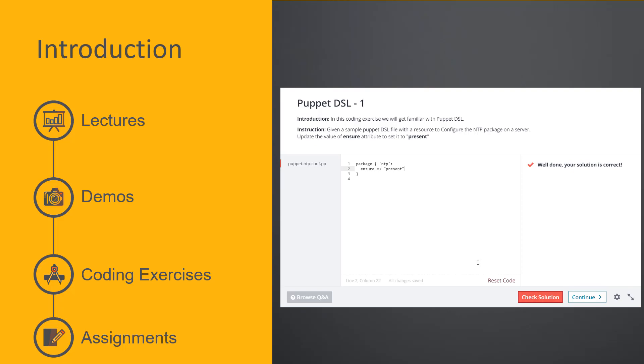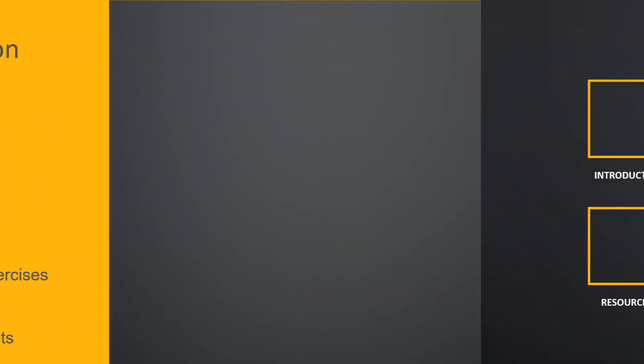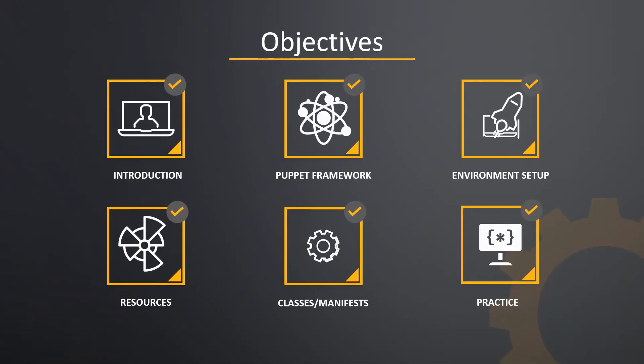So what are we going to cover in this course? We will get started with an introduction to Puppet and what Puppet can do. We will go through the Puppet terminology followed by real-time Puppet setup in your environment. Then we will get started with an introduction to Puppet resources, which are the basic building blocks to start Puppet coding. We will create a four-way process to create, check, test and run Puppet code.